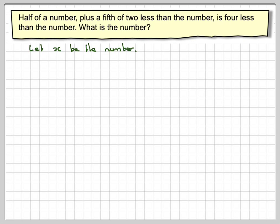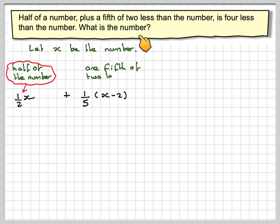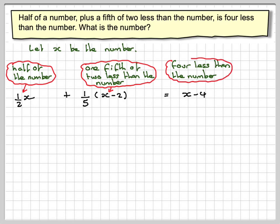Let x be the number. We've got half of the number plus a fifth of the number take away two (because it's two less than the number) is equal to x minus four, which is four less than the number.